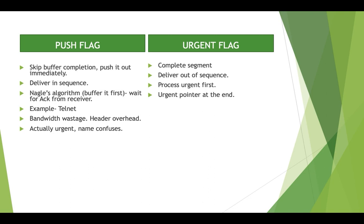Now, why is it called urgent flag then? In case of the urgent flag, there are several bytes. Let's say there are 10 bytes of data, and out of these 10 bytes, 1 to 5 are marked as urgent data. There are two concepts: one is the urgent flag and one is the urgent pointer. The urgent flag is held by all these bytes — 1, 2, 3, 4, 5 — because they are urgent data. The urgent pointer would be at the very end of this data. Let's say our data is from 1 to 5; that's urgent. Then the urgent pointer says the next value after the urgent data, meaning the urgent pointer value would be 6 if 1 to 5 is the urgent data.